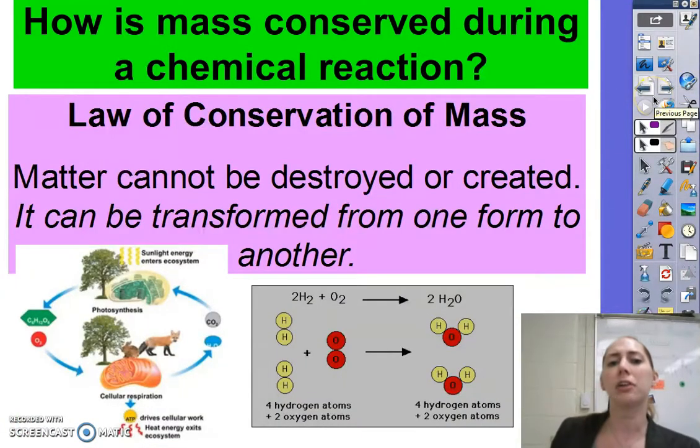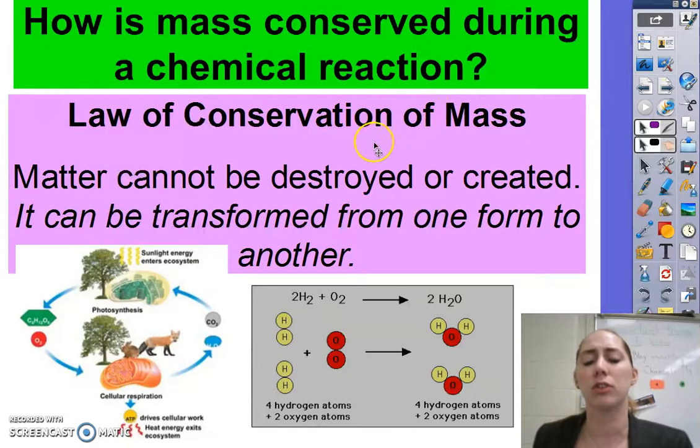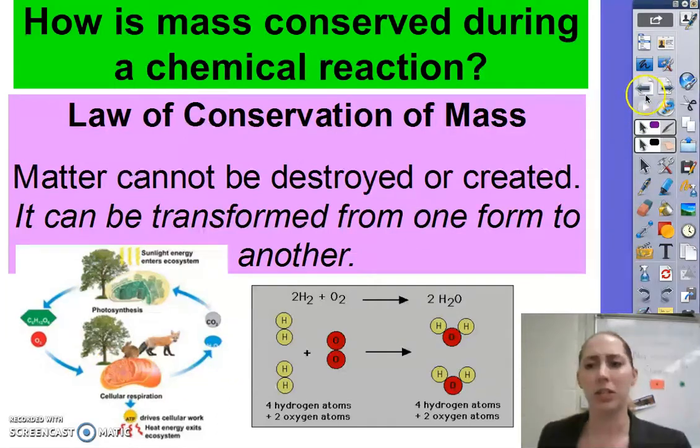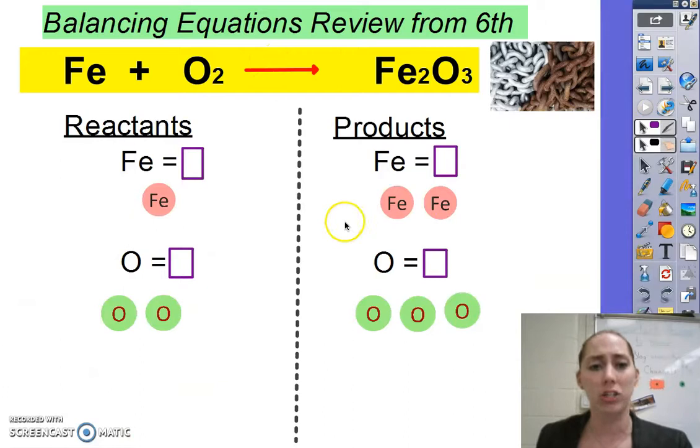So in that chemical reaction, how is that mass conserved within it? Now remember back to your law of conservation of mass. Matter cannot be created or destroyed. It can only be transformed. That's how we have photosynthesis and cellular respiration being able to be a cycle. We model that through balancing equations.